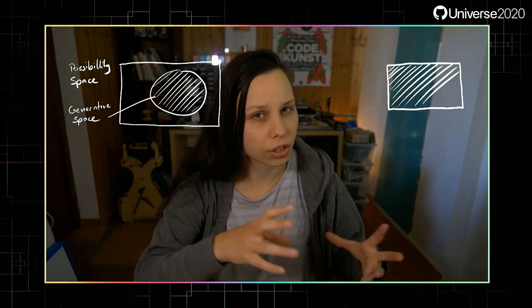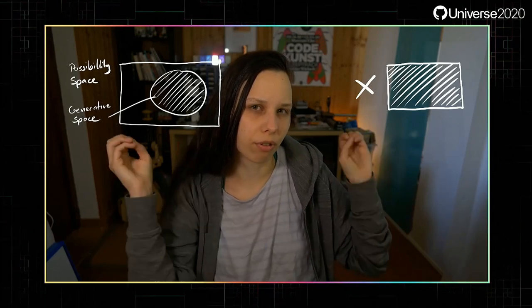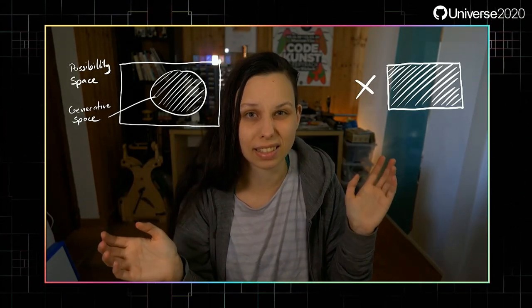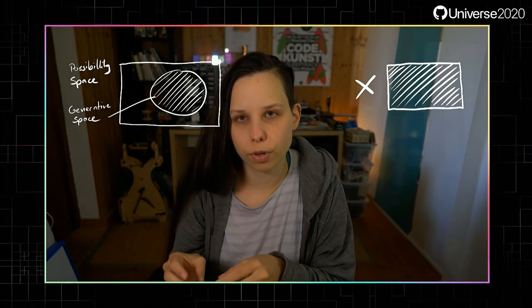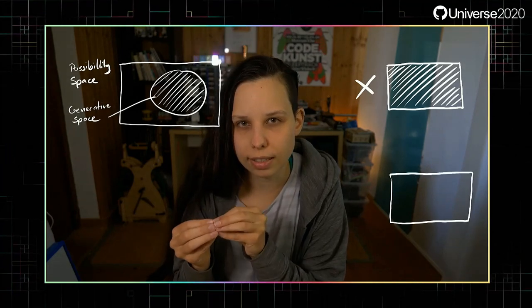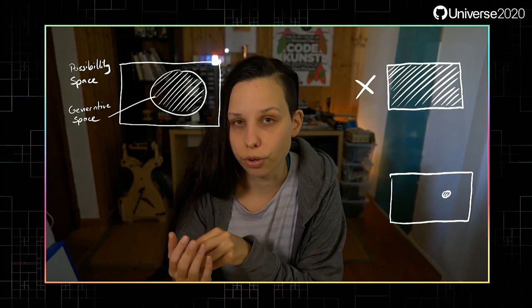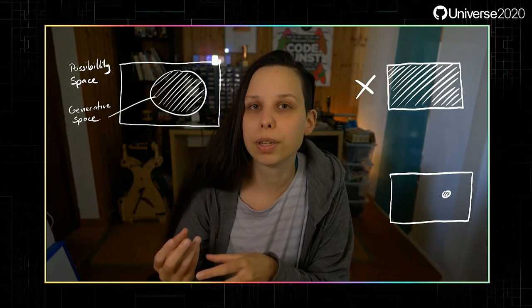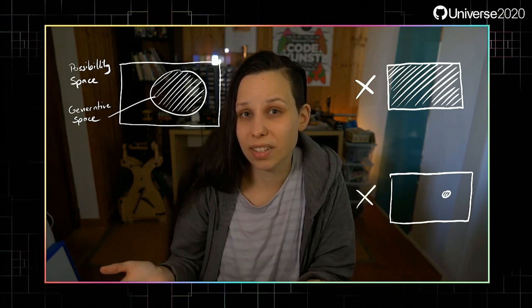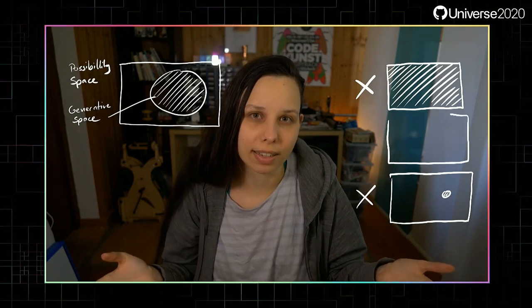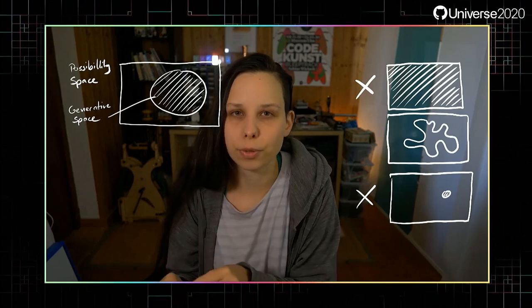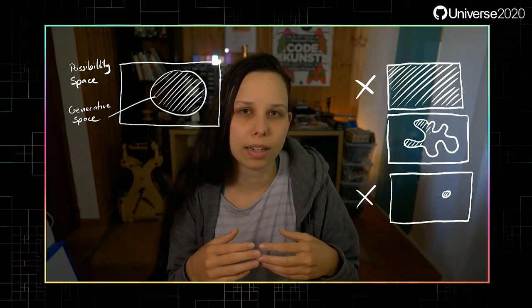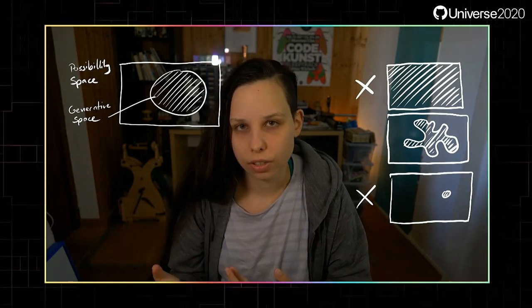For generative art there's a very important question: how large should your generative space be? Let's look at the two extremes. You can make it super big so it's basically the full possibility space — you get lots of different results, but they might get boring or uninteresting because you're just throwing random stuff in and hoping it looks good. The other extreme is a very small, very defined generative space. You're in total control, but maybe you only get one result, which makes it boring. You need to find a nice middle ground where you have variety but all results still look interesting.